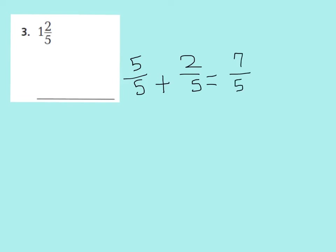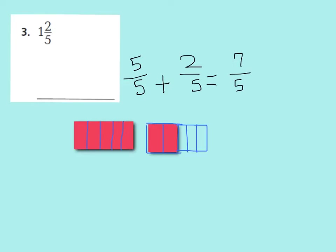Here's what my model would look like to show why. The model shows 1 whole cut into 5 fifths — there's my 1 whole — plus another 2 fifths. If you add up all the fifths: 1, 2, 3, 4, 5, 6, 7 fifths. You can always check with multiplication: 1 times 5 is 5 — one group of 5 — plus 2 more for the numerator. So 5 plus 2 is 7 fifths.